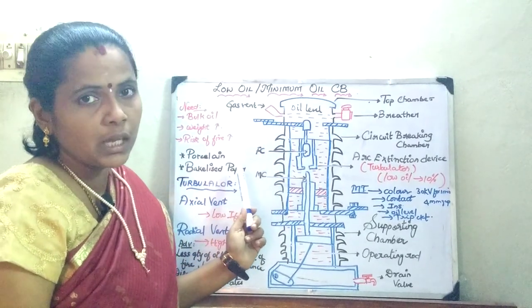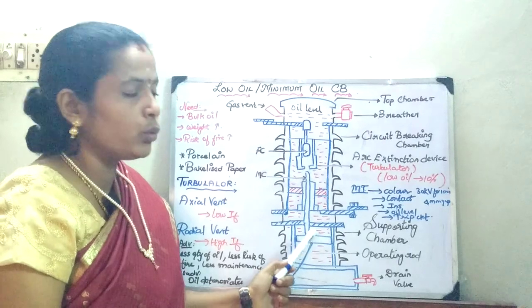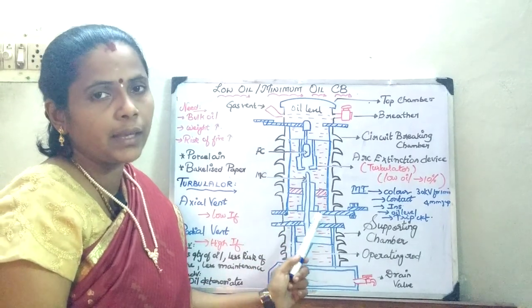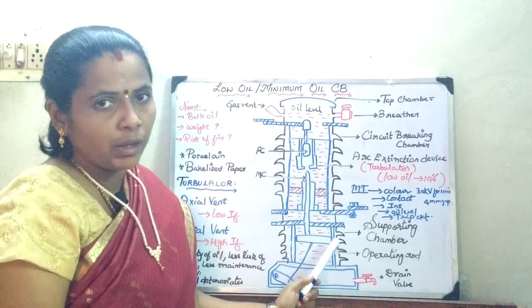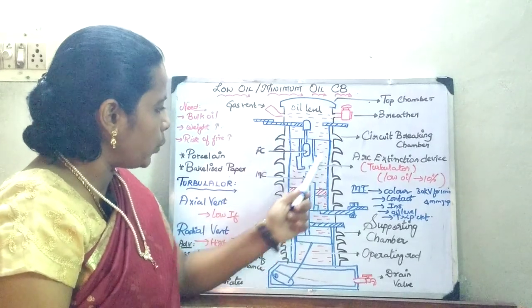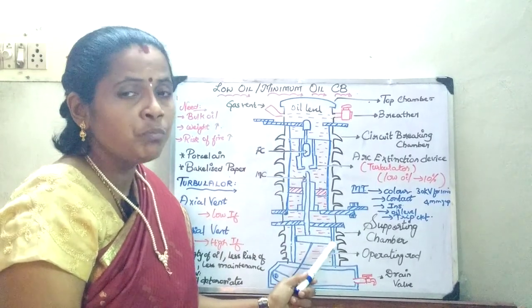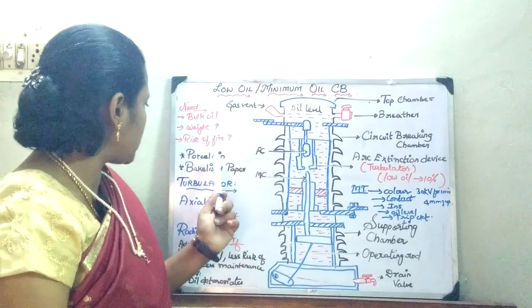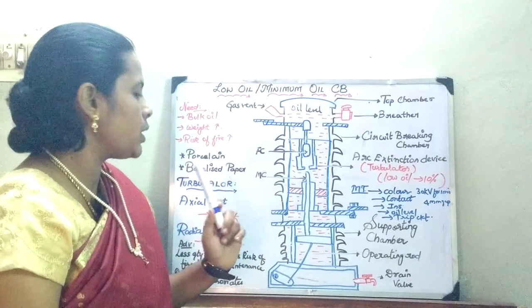Now here the oil is going to be used only for arc extinction purpose, whereas the outer insulation is going to be provided by means of solid medium such as porcelain or pecalized paper.